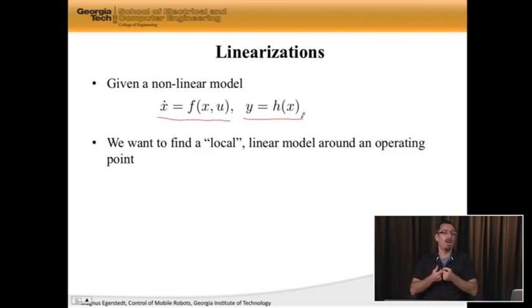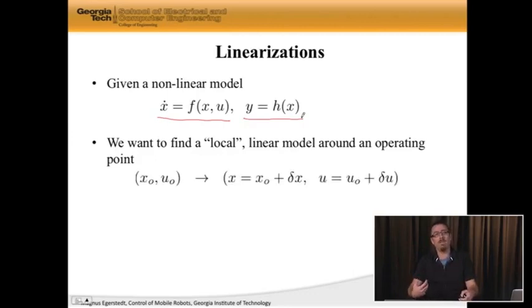And what I mean by local is that we have to pick an operating point. In the pendulum, we said let's assume that the pendulum is hanging very close to straight down. So straight down is the operating point. And then what we do is we're going to have to define a new variable. So let's say that this is my operating point. This, in the pendulum case, would be the angle is zero and I have no control input. Well then, my actual state is going to be the operating point plus some small deviation from the state. Similarly, my control input is going to be the nominal operating input point plus a small deviation.